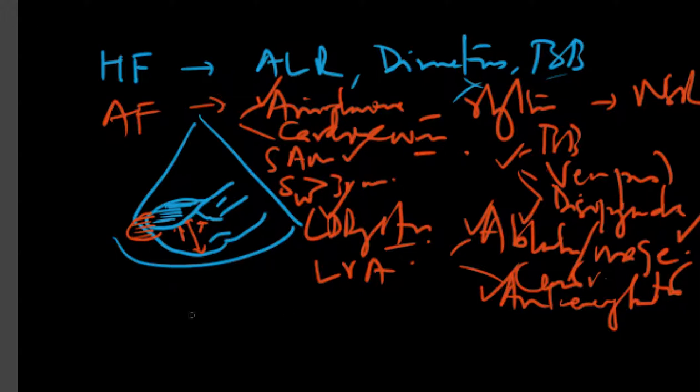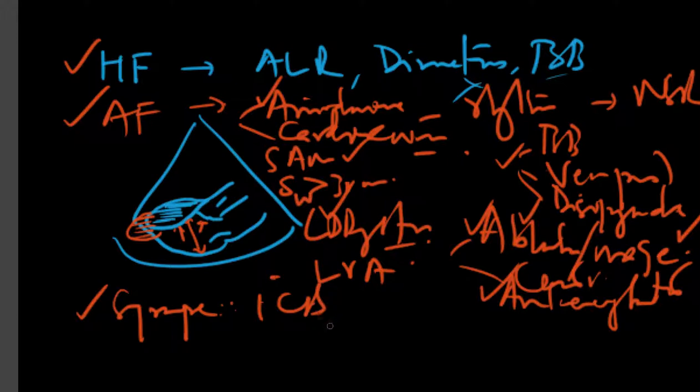Besides heart failure, atrial fibrillation, and syncope—how do you manage syncope in these patients? First, find out if it's any of the arrhythmias causing it. The patient needs an ICD. If you have a lot of VTs and VFs on Holter, you're better off using ICD placement because syncope is a very high-risk patient in terms of hypertrophic cardiomyopathy.